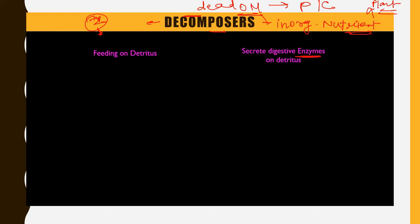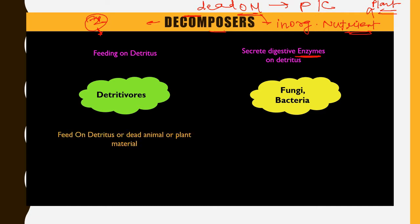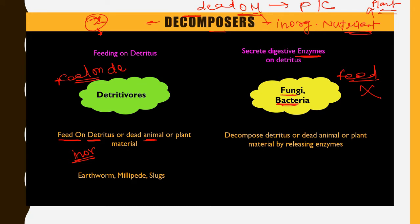Based on these two methods, decomposers are grouped into detritivores and saprotrophs such as fungi and bacteria. Detritivores feed on detritus or dead organic matter, ingesting nutrients and excreting in organic form. Classical examples are earthworms, millipedes, and slugs. Fungi and bacteria cannot feed directly; instead they release digestive enzymes that convert dead organic matter into small molecules, which are then absorbed through their cell walls and eventually converted into inorganic nutrients.